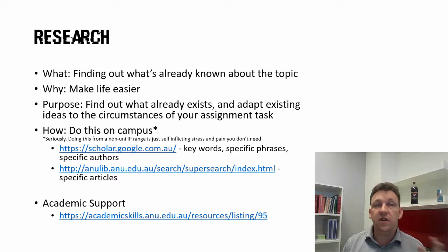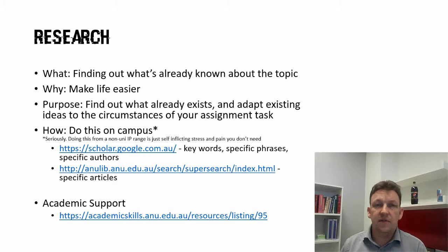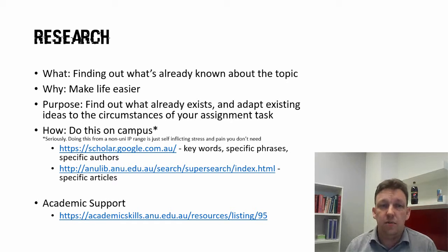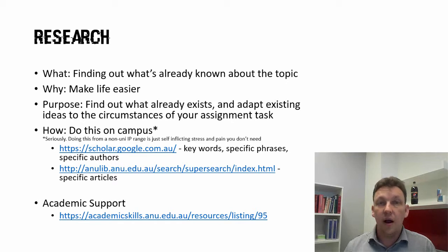So do your research. When you get told to apply theory, go to Google Scholar. Scholar.google.com.au is one of your best assets, but do it on campus. If you try doing this off campus, all you're going to do is get disappointed and annoyed. If you want your best results, do your research whilst you're on an ANU or another university IP range, because you'll get access to the files. If we've got the subscription to that journal, you can get that file. Life's a lot easier.